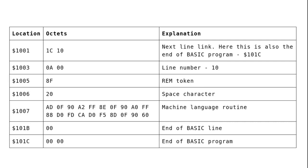At location 1005 we have our REM token, which is 8F, followed by a space character, and then we have the machine language routine that we want to put in. We finish that BASIC line with a zero, and then finish the program with two zeros. So that's exactly how this one line is laid out, and how the BASIC program is then terminated in memory.